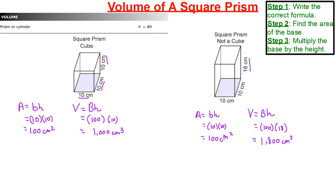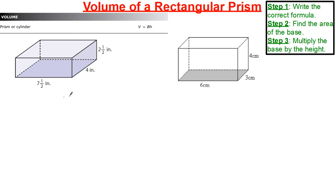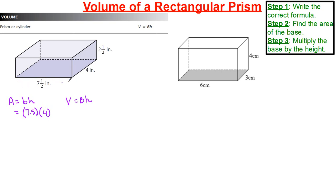Let's try all of our other prisms and our cylinder. For our next prism, we have a rectangular prism. The volume of a rectangular prism is equal to base times height. To figure out the base, we calculate the area: area equals base times height. Our base is 7.5 and our height is 4. If base times height is confusing, just think of it as length times width.